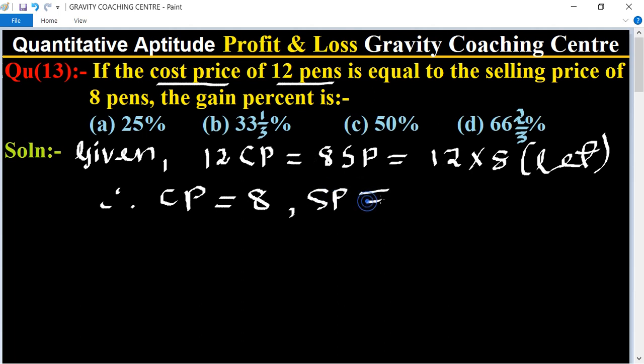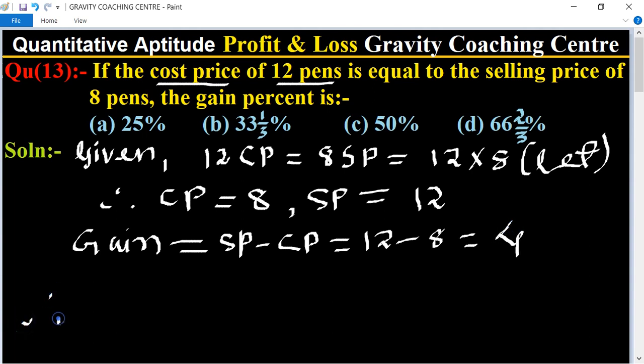So here SP is greater than CP, so gain equal to SP minus CP, 12 minus 8 equal to 4.